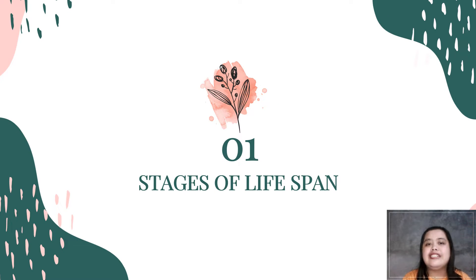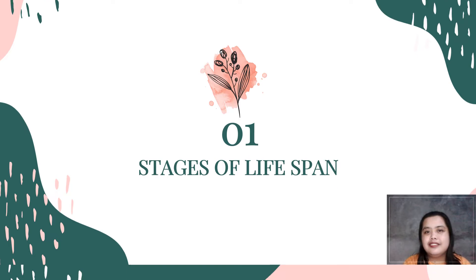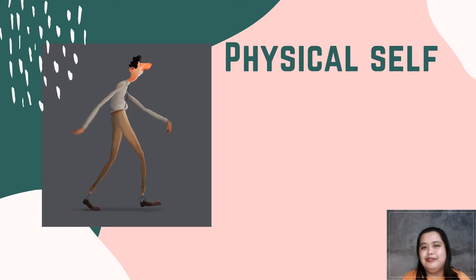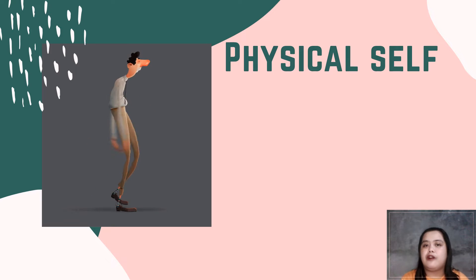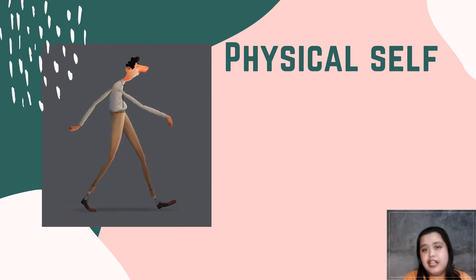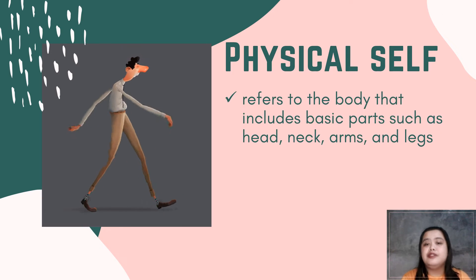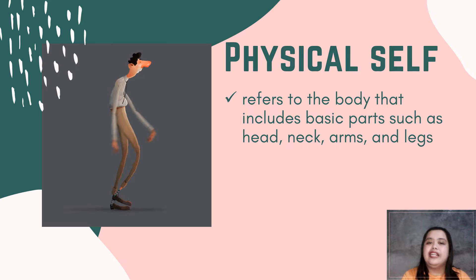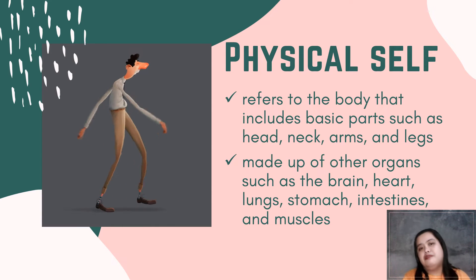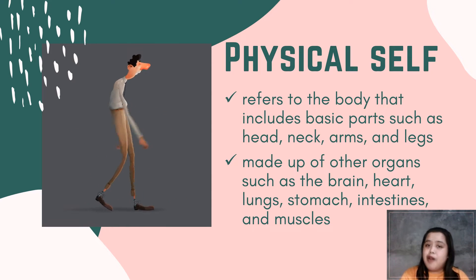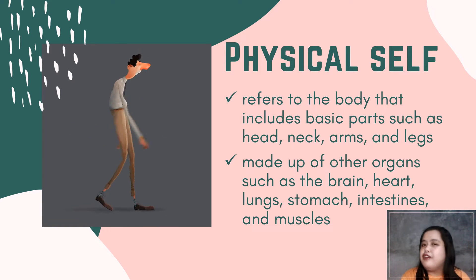Let's start with the physical self. We'll define it first so we're on the same ground. When we say physical self, it refers to the body — basically we're talking about the body. It includes basic parts such as head, neck, arms, and legs, and is made up of other organs. The organs we don't see are also part of our physical self: the brain, heart, lungs, stomach, intestines, and muscles. These organs work together to perform different functions.